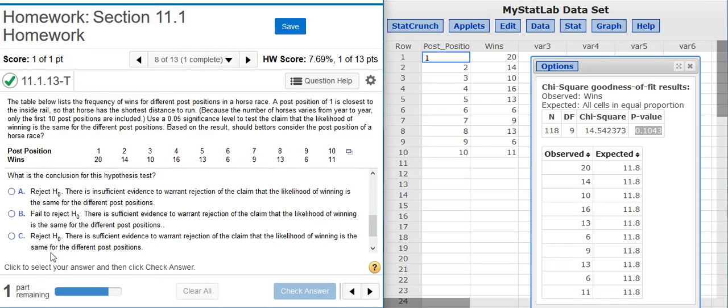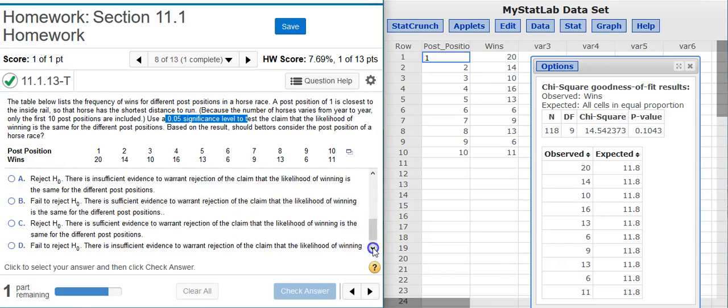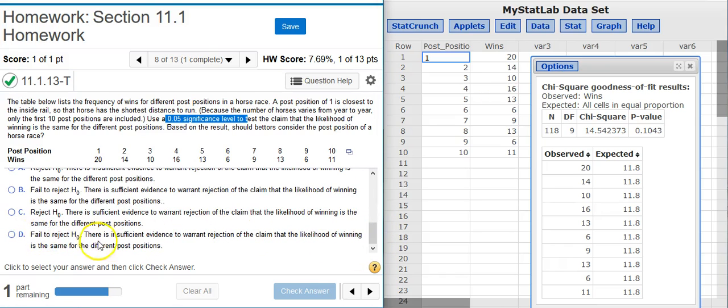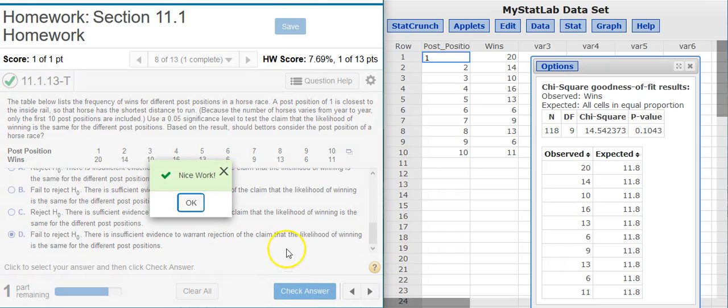What is the conclusion for this hypothesis test? Well, we were asked to use a 5% significance level to test our claim. Our p-value over here is greater than 5%, so we're outside the region of rejection, and therefore we fail to reject the null hypothesis. Every time we fail to reject the null hypothesis, there is insufficient evidence. So we're going to want this answer option here. Nice work!